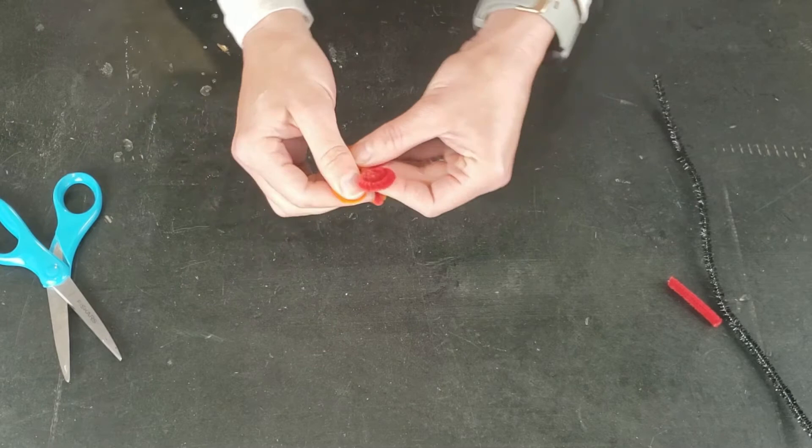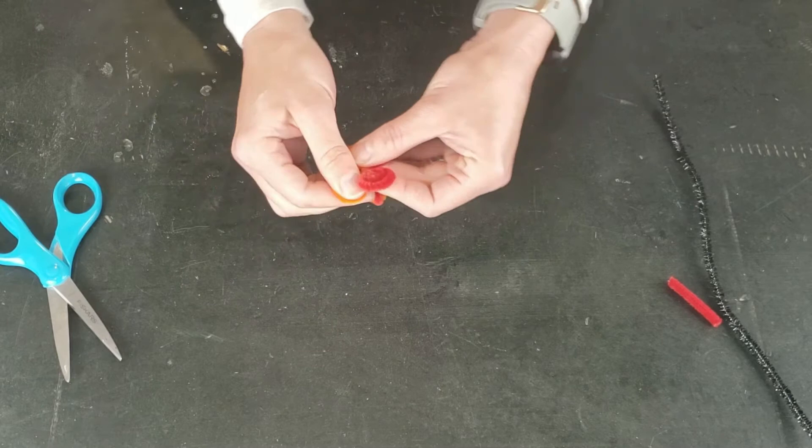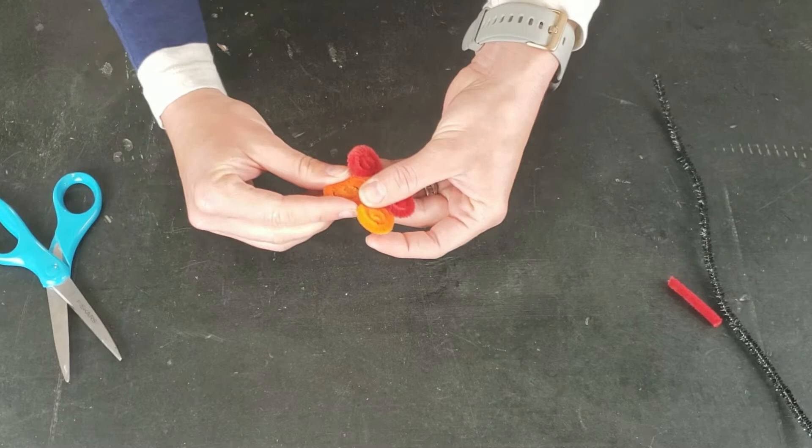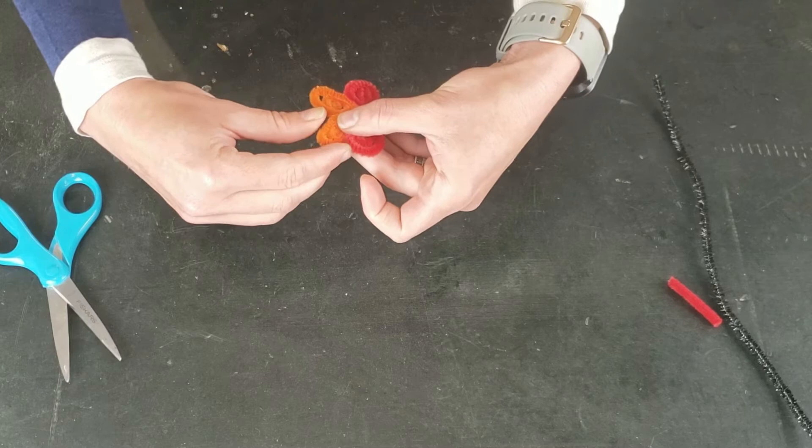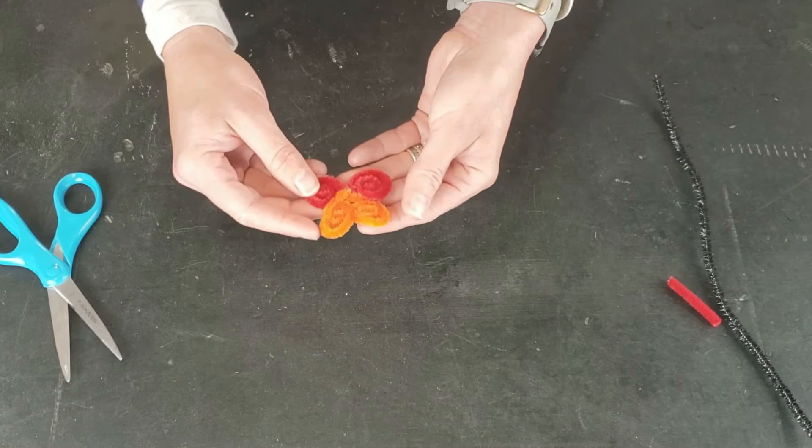If you have a little trouble, you can ask your adult helper with this part, but you should be pretty good. And then just to shape it a little bit more, you can take it and pinch those spirals between your fingers if you want to shape your wings even more.